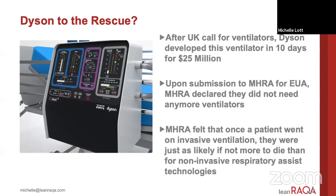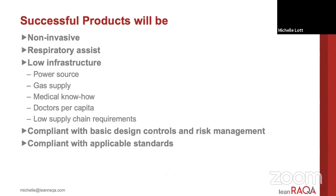So if we shift gears and look at what's needed on the market right now — Dyson thought they were coming to the rescue of the UK early on, and in 10 days and with $25 million they developed a fairly sophisticated ventilator. These are people who know how to design products with electrical safety requirements. However, when they submitted this to the MHRA, the MHRA declared that they did not need any more ventilators because they felt like a patient on invasive ventilation was just as likely, if not more likely, to die as opposed to non-invasive respiratory technologies.